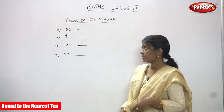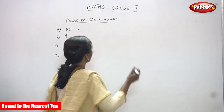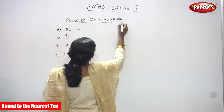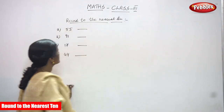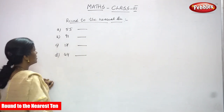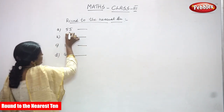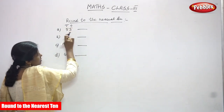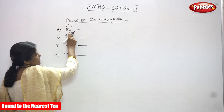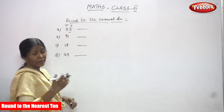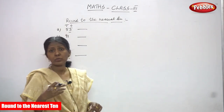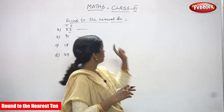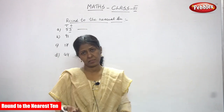Round to the nearest 10. So, nearest 10 we have to write. Round to the nearest 10. The first question is 55. I told you, always you must look at the ones digit. So, what is the number in the ones place? 5. What is the number in the ones place? 5. So, 5 means it comes under which rule? We have to round to the nearest 10.